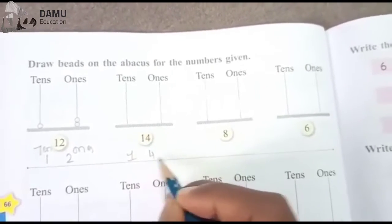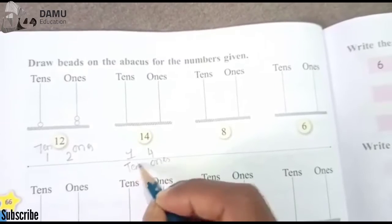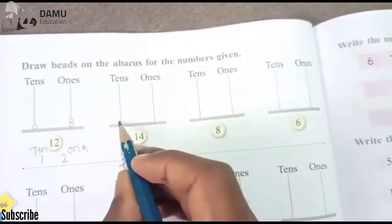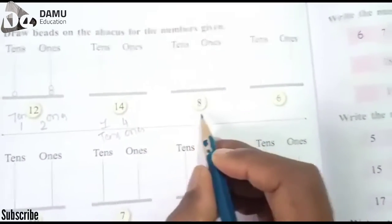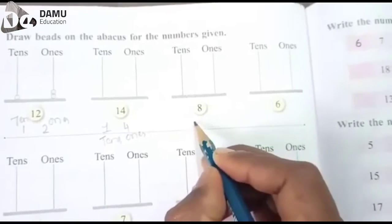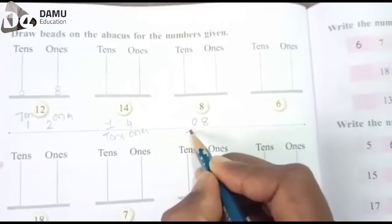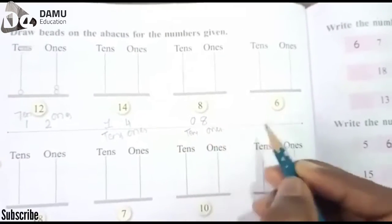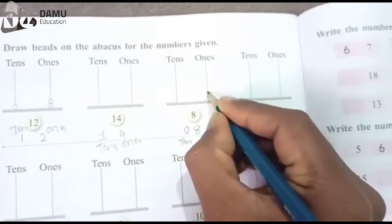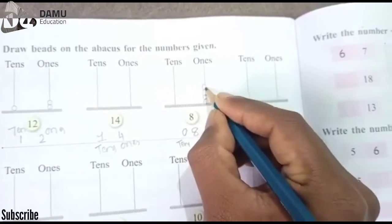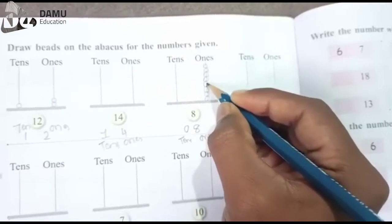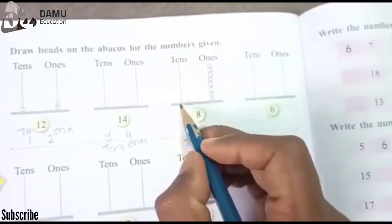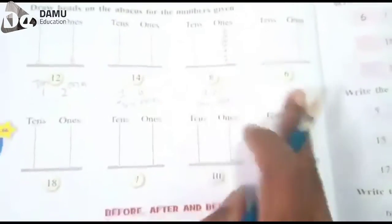For the number 8, there is only the ones place — we write it as zero tens and eight ones. Draw eight beads in the ones place: one, two, three, four, five, six, seven, eight. There are no beads in the tens place because there is nothing there.